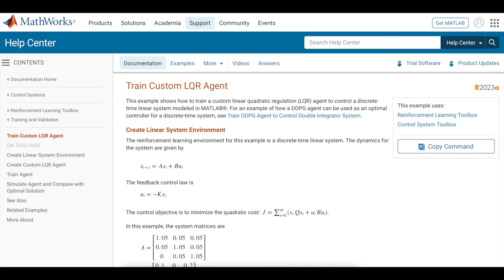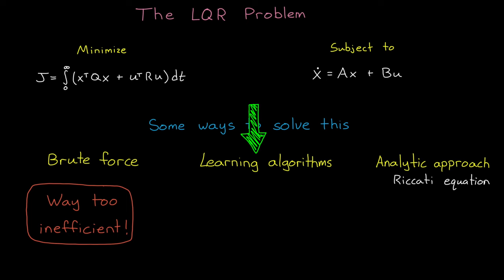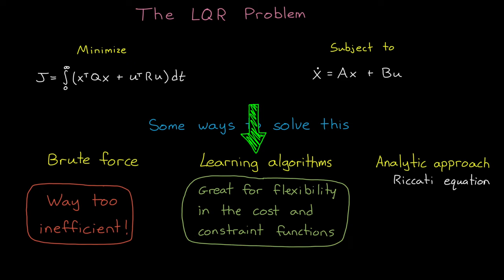All right, so with all of that being said, learning algorithms are useful optimization techniques when there's a lot of flexibility in the system dynamics model or in the cost function. And this is because there often isn't an analytic way to solve the problem, and so we have to approach it iteratively with gradient descent or some other learning method.